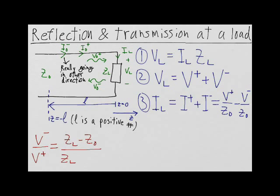Using these three equations, we can find the ratio of V- to V+, and this ratio is defined as gamma, which is the reflection coefficient. Gamma is a complex quantity.